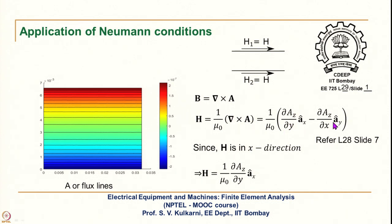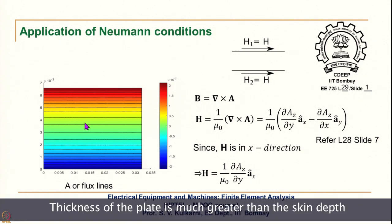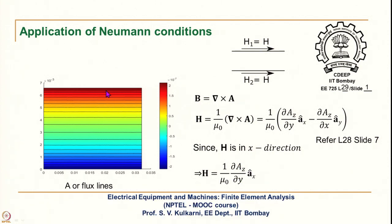This was derived in slide 7 of lecture 28. Since H is only in the x direction, only that component exists. We are imposing H on this boundary, and inside H is going to be in the x direction only. Because of that, H is going to reduce as you go from the surface inward, and that is the reason that ∂A_z/∂y is also going to change as you go inside.